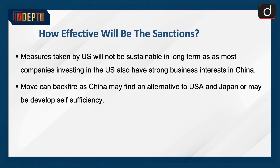How effective will the sanctions be? Measures taken by the US will not be sustainable in the long term, as most companies investing in the US also have strong business interests in China. These moves can backfire, as China may find an alternative to the US and Japan or develop self-sufficiency.